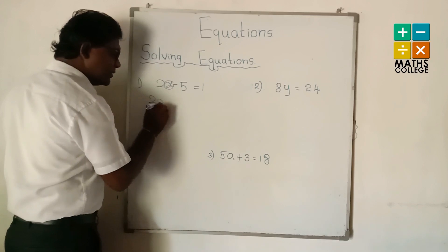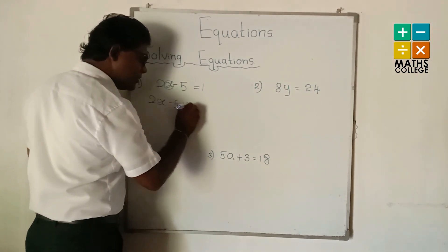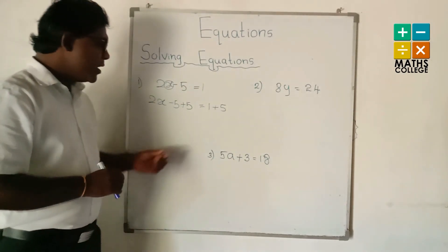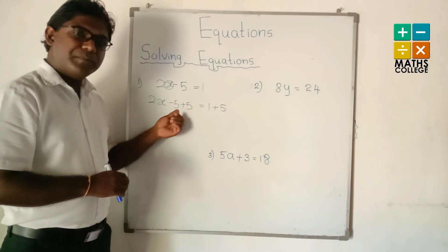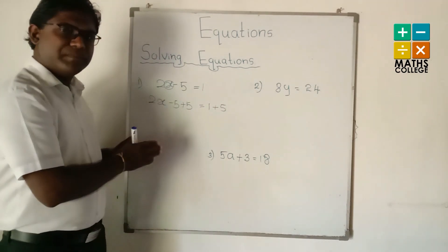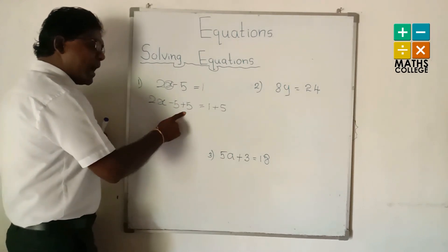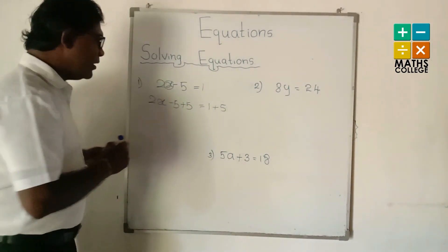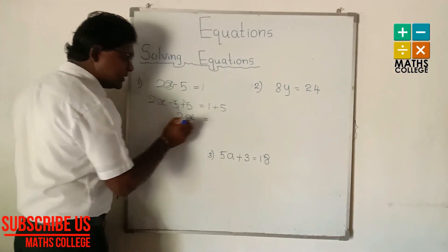We have 2x subtraction 5, and we apply the opposite operation. My dear students, we apply the opposite operation to remove this 5 — that means we have to apply it to both sides, not only one side. Minus 5 plus 5 equals zero, so they cancel. 2x remains on this side.